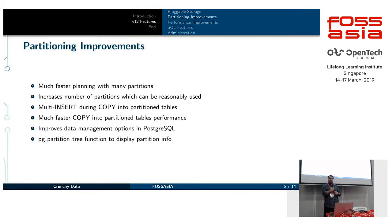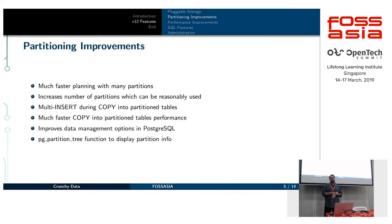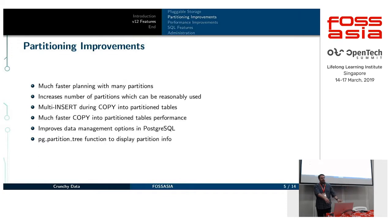We've been making a lot of improvements to partitioning. Postgres has declarative partitioning today, and over a number of releases we've been improving on it. One of the big things going into V12 is much faster planning when there are a lot of partitions involved. This is a big change from the inheritance-based planning system we've been using for a long time, since we've moved away from inheritance-based planning toward a declarative style.